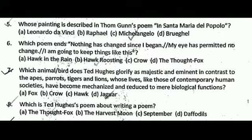Next question: which animal or bird does Ted Hughes glorify as majestic and eminent, in contrast to the apes, parrots, tigers, and lions, whose lives, like those of contemporary human societies, have become mechanized and reduced to mere biological function? The correct answer is D, that is Jaguar.